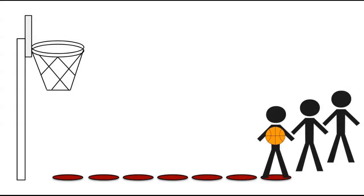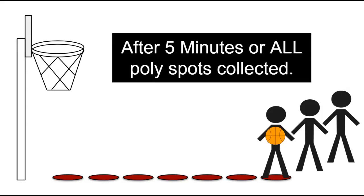Now with the red team, you're going to have a line of people and you're going to have the first person on the last poly spot. Now you're going to have five minutes or the first team to collect all their poly spots. That's when the round will end.